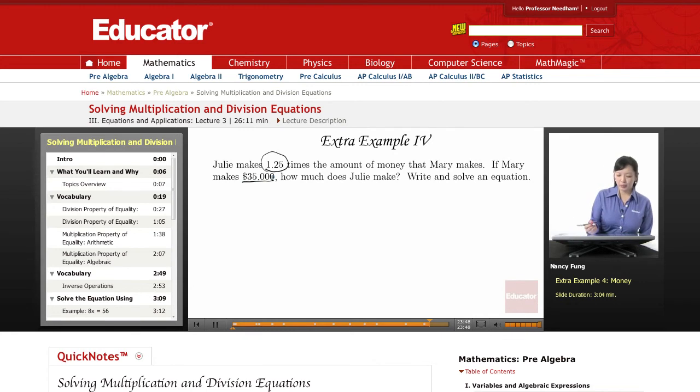So if we want to do this with arithmetic, we could say 1.25 times $35,000 will give us what Julie makes. So let's do that on the side here.